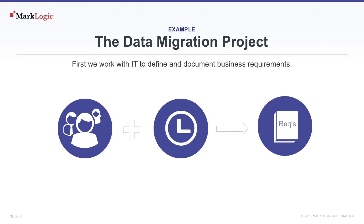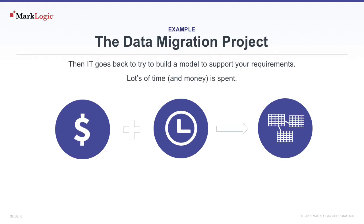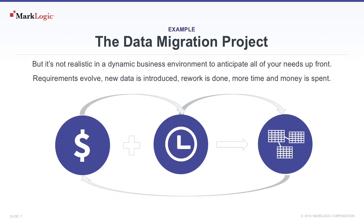First, we work with IT to define and document business requirements. Then IT goes back to try and build a model to support your requirements, which can involve lots of time and money. But in reality, this isn't realistic. Murphy's Law says you won't be able to anticipate all your needs up front. Requirements evolve, new data is introduced, so rework is done, and more time and more money is spent.